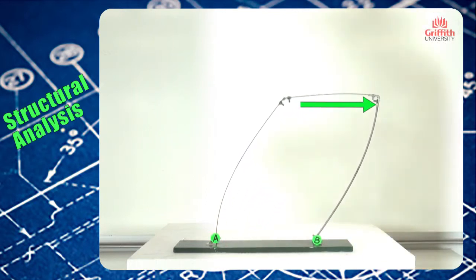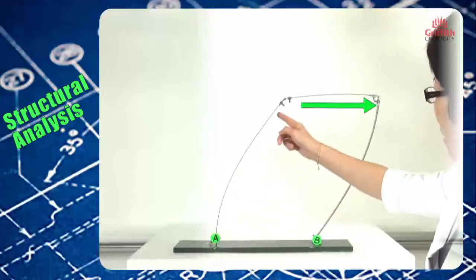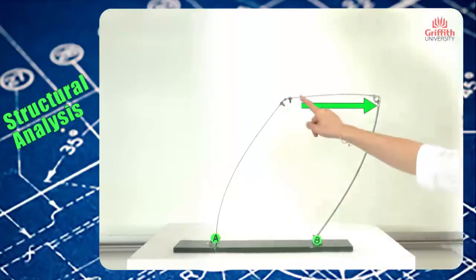Now the beam deforms into a convex shape, again a single curvature without a control flexor point.